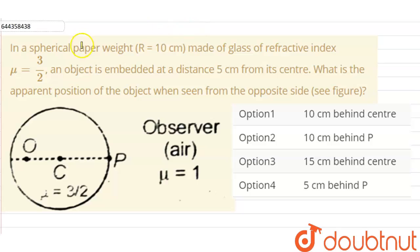Hello everyone, so our question is: in a spherical paper weight of radius of curvature 10 cm, made of glass with refractive index μ equals 3/2, an object is embedded at a distance of 5 cm from its center. What is the apparent position of the object when seen from the opposite side?